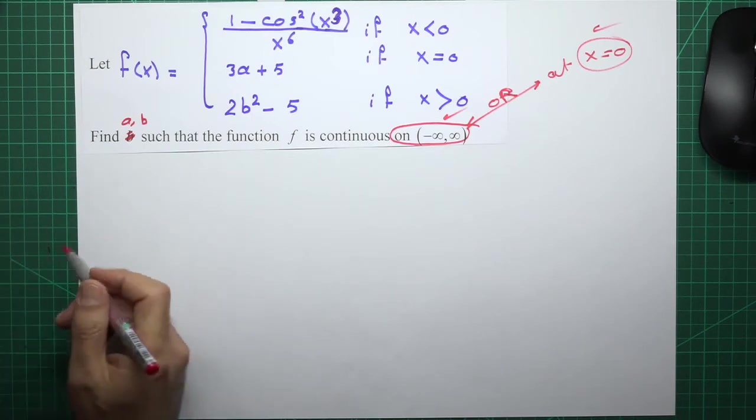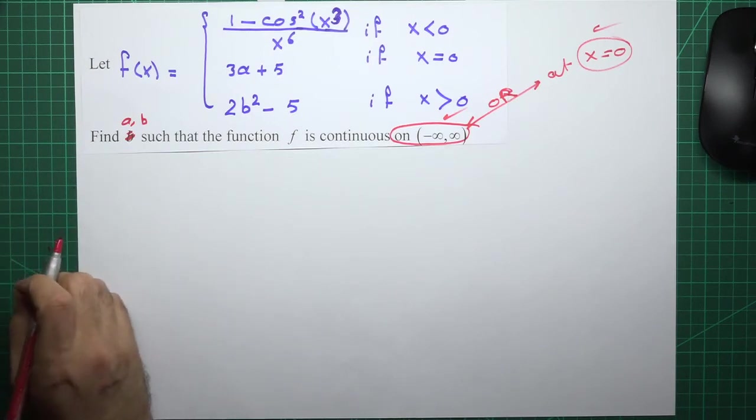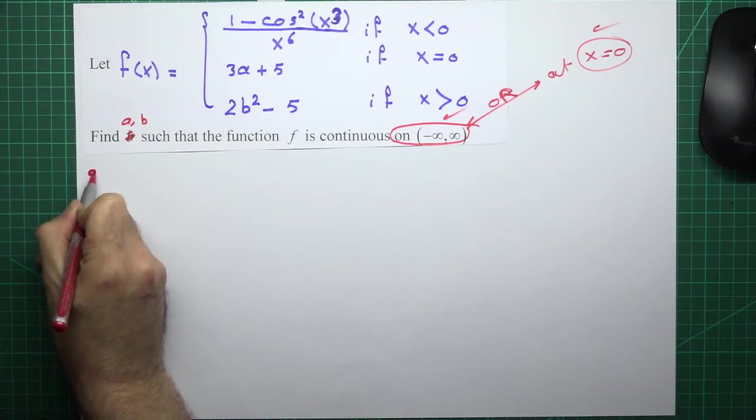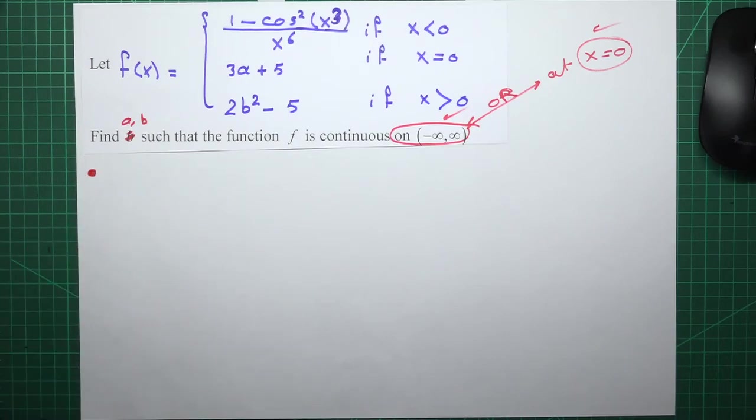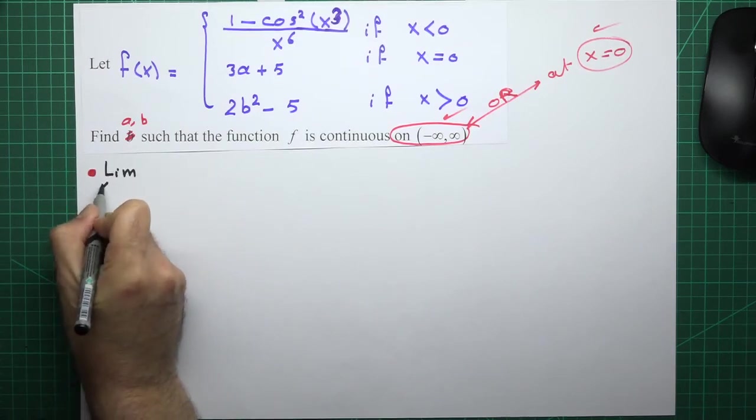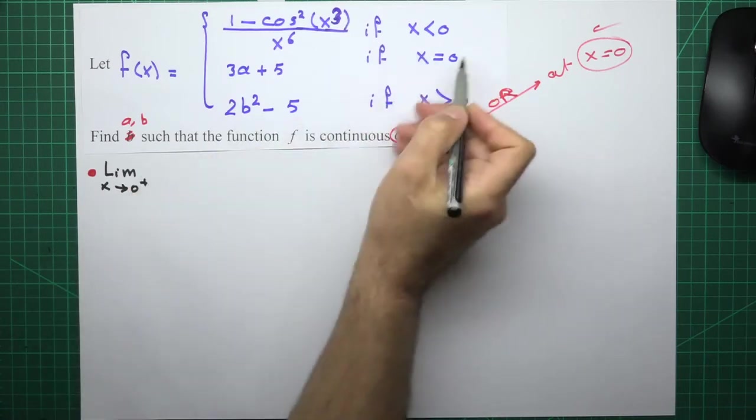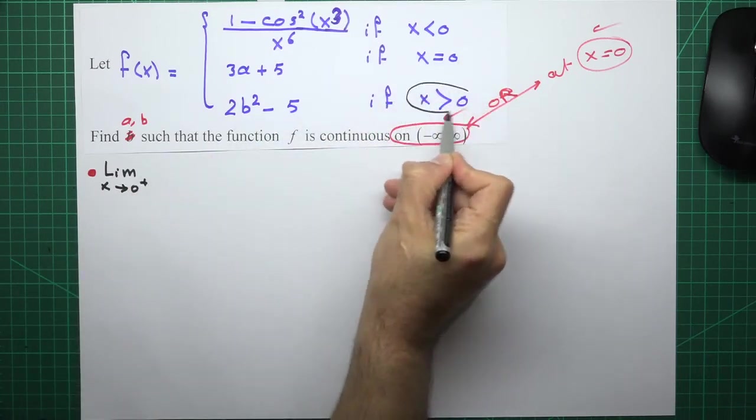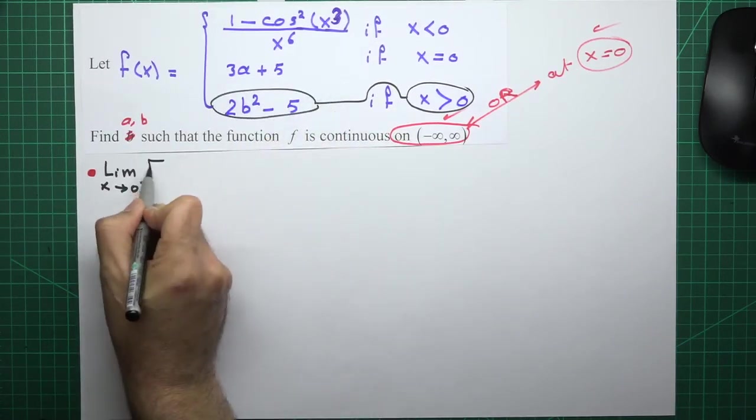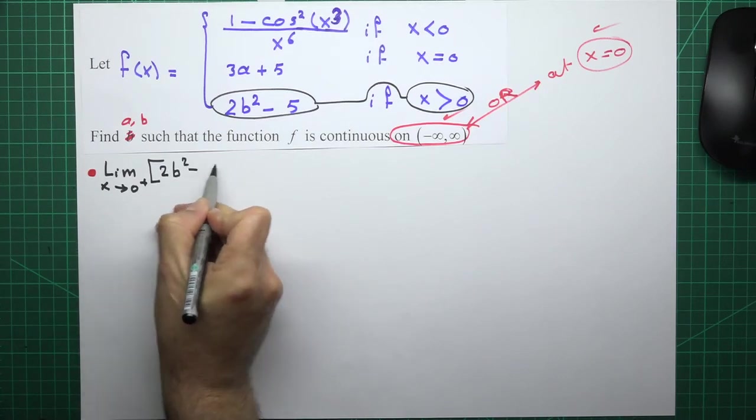Let's look at the function. Let's look at continuity at 0 or minus infinity to infinity. We can understand that the limit from right equals the limit from left equals the image. Limit as x goes to 0 from right, write this one greater than 0, I will use this function: 2b squared minus 5.